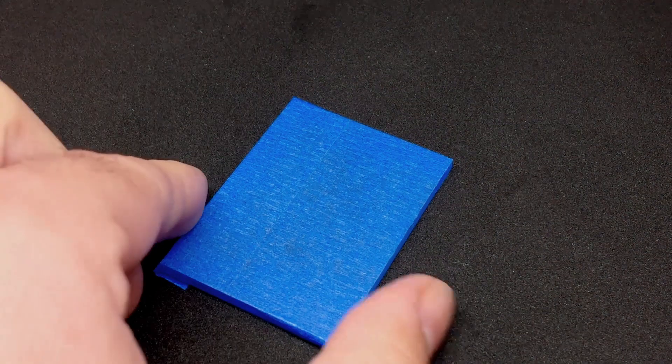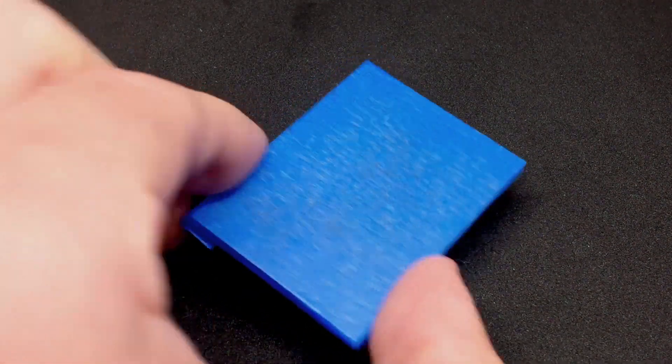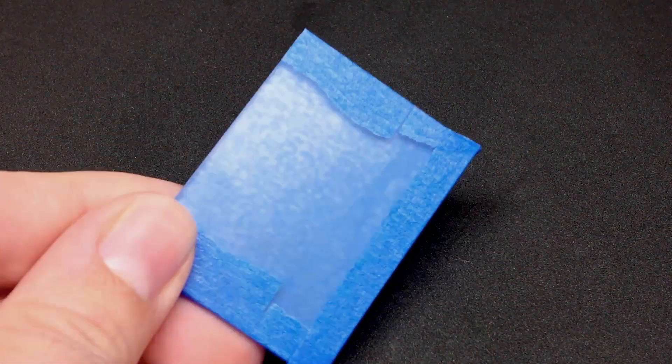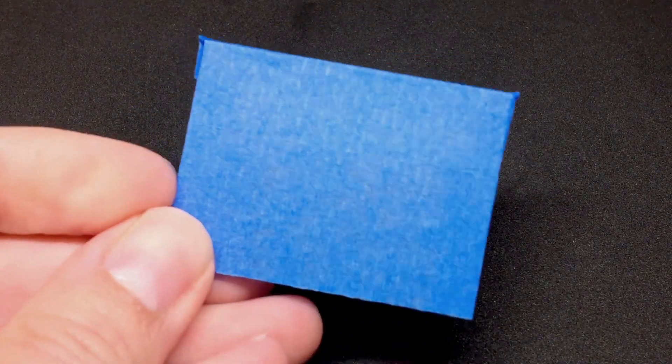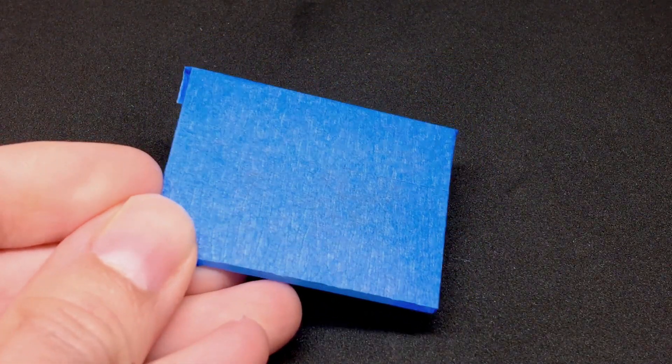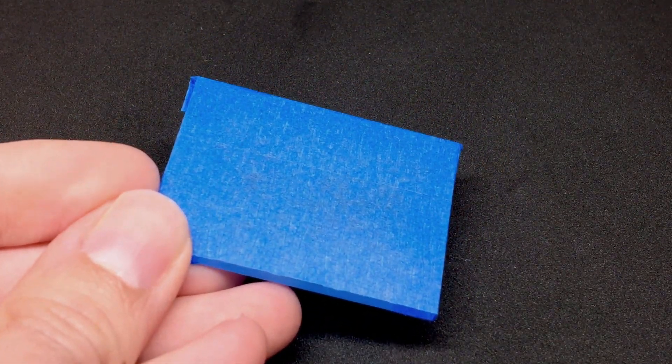Since I had luck with blue painter's tape before, I'm going to try it again. I'm taking the other acrylic sample, covering it in blue painter's tape. I'm going to try etching on the whole thing.